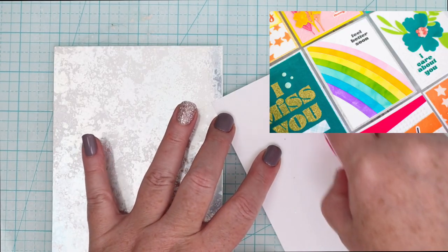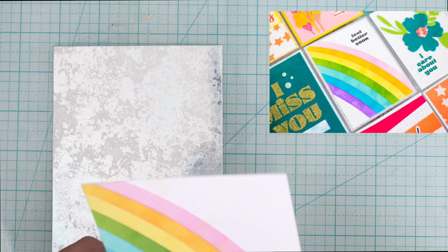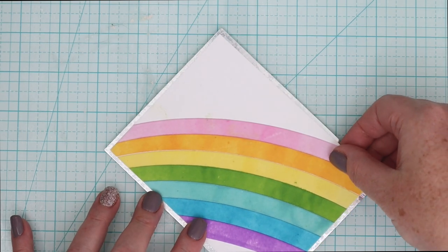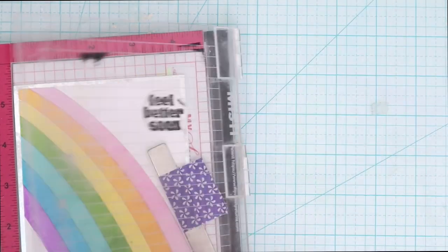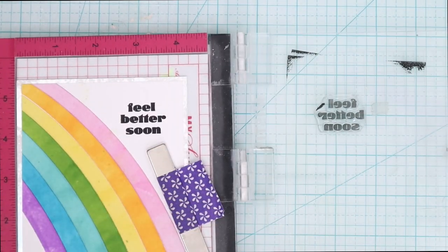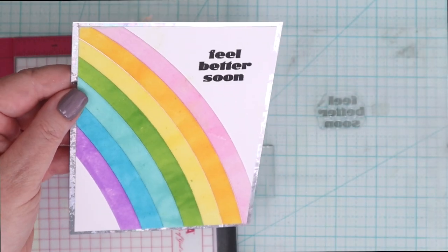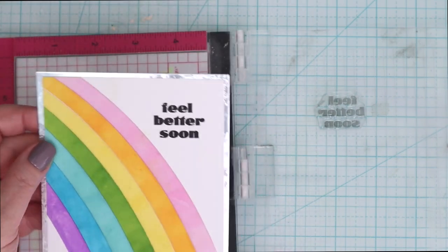This card I'm going to use some tape runner to adhere the flock rainbow down to some holographic cardstock and then just use some black ink to stamp a sentiment in the corner there. Again really simple but lots of texture and color to this card.